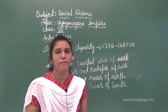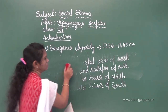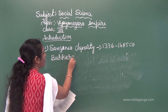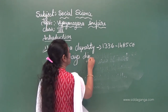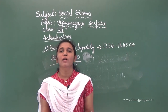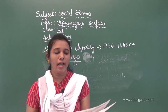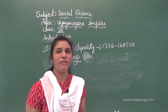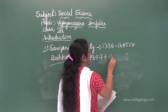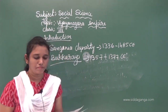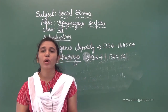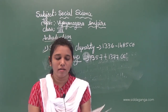Next we study about Bukkaraya. Bukkaraya ruled the Sangama dynasty. He was the brother of Harihara and ruled from 1357 to 1377. Since Harihara had no son, Bukkaraya became the king of this dynasty after Harihara.